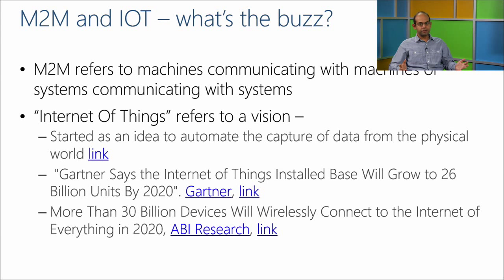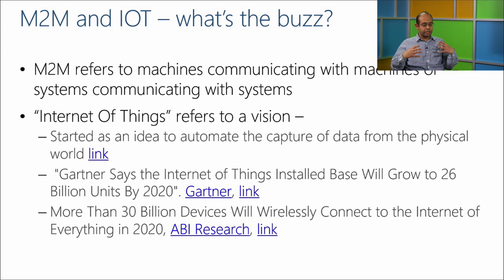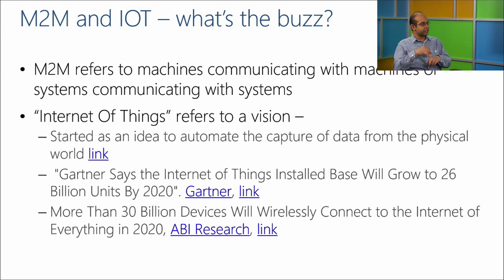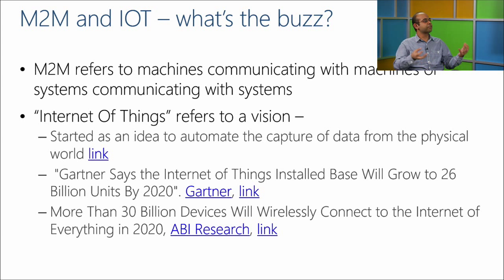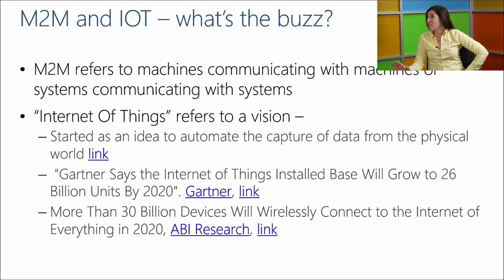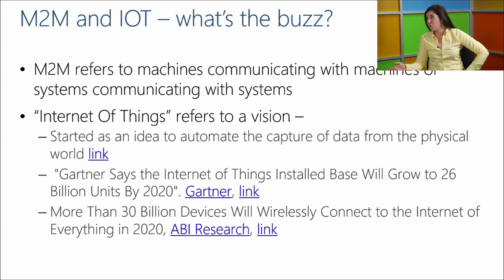What IoT has started referring to is the explosion of the kinds and number of devices that are now more and more connected. In terms of just buzz out there, you've heard 'internet of everything,' 'internet of things.' It actually started with a very simple scenario of being able to bring data from the physical world into the cloud. I think that's gone a little out of control — like, changing a light bulb is an internet-of-things scenario, but it's a little different from what the original vision was.